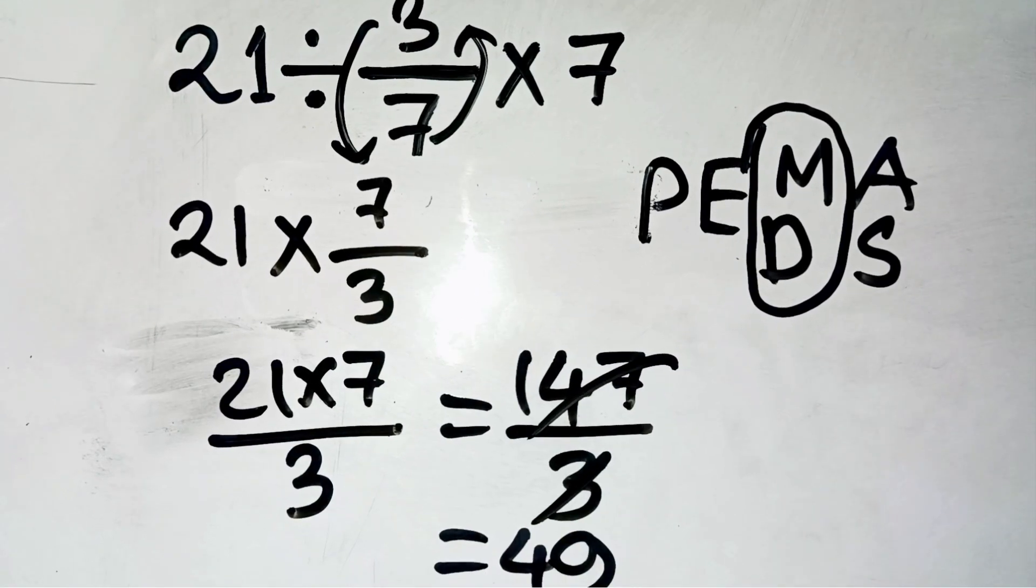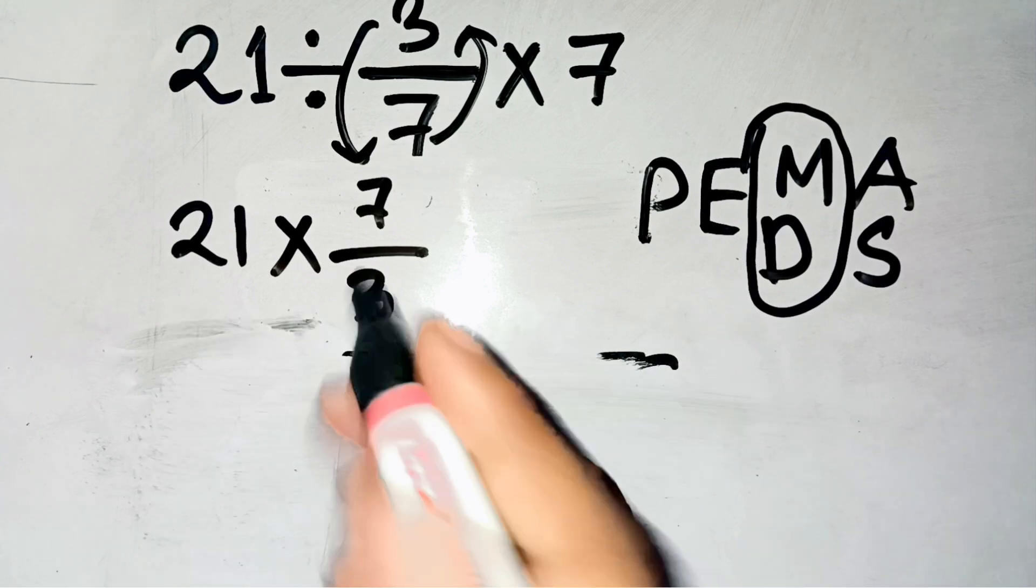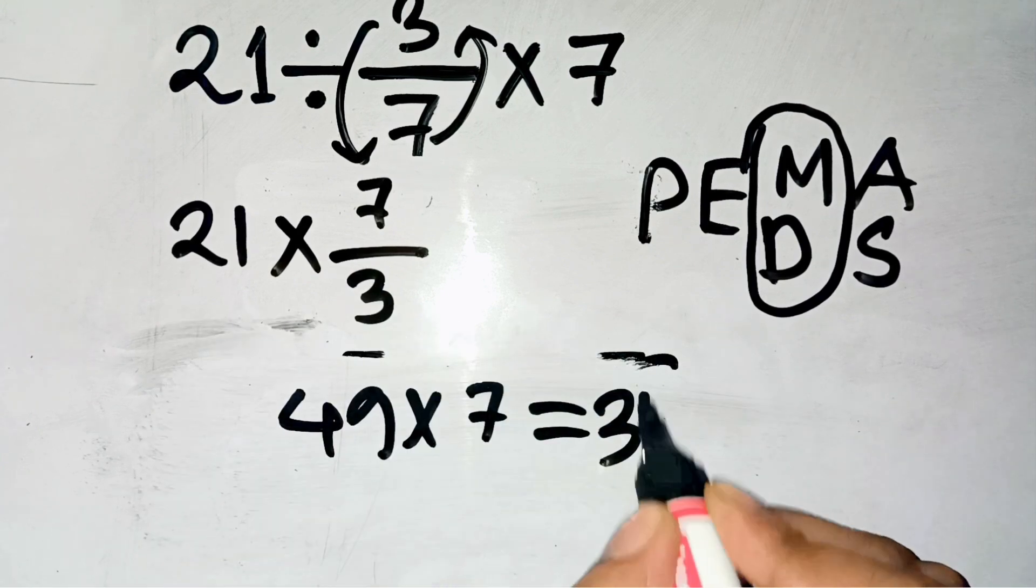Alright, now we still have that times 7 left from the original equation. So 49 times 7 equals 343. Boom.